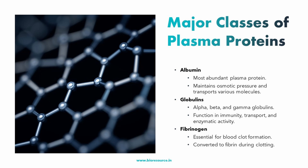Additionally, globulins include transport proteins that carry lipids, hormones, and other molecules. Coming to fibrinogen — it's a large protein that converts into fibrin during blood clotting, forming a mesh that traps blood cells and platelets to form a clot, essentially helping in blood clotting. The remaining approximately 1% of plasma proteins comprises enzymes, hormones, and other regulatory proteins involved in various physiological processes.